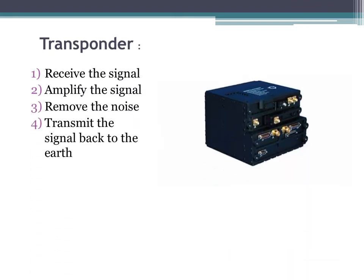The main component of a satellite is a transponder. The communication satellite contains multiple transponders on it. Transponders are a combination of transmitter and receiver. They perform the following functions: they receive the signal, amplify the signal, remove the noise from the signal, and retransmit the signal back to the earth.